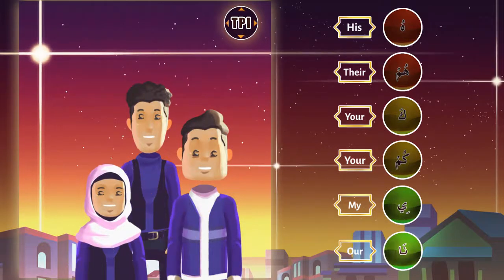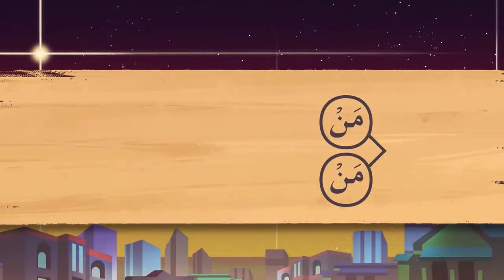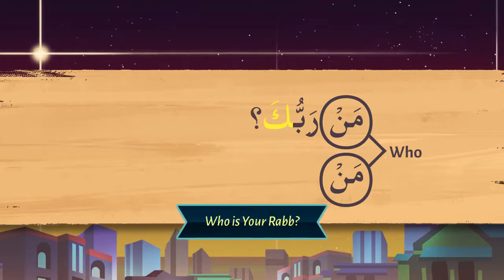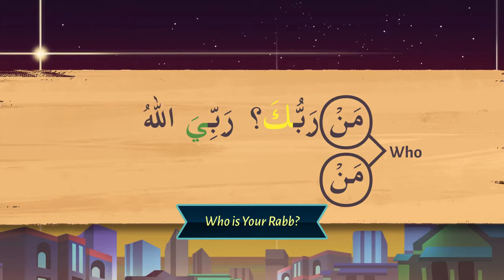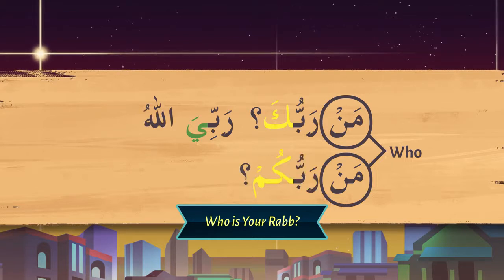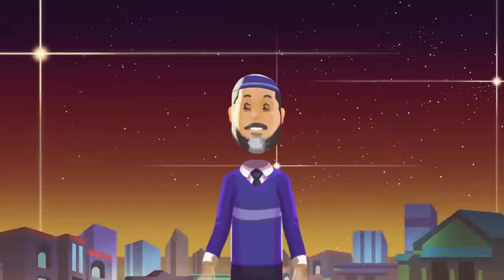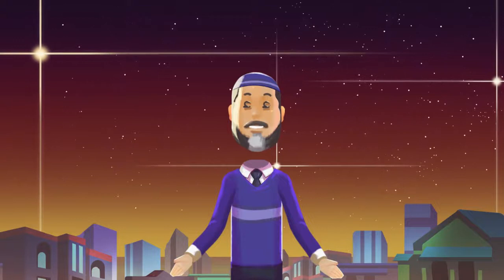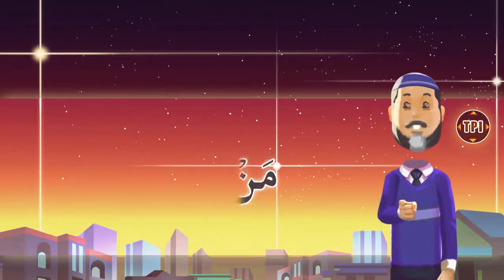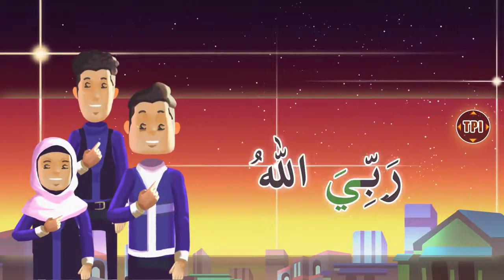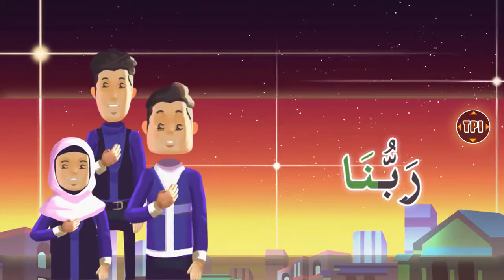Let's say spoken Arabic. Man means 'who?' Man Rabbuka — Who is your Rab? You will say: Rabbi Allah. Man Rabbukum — Rabbuna Allah. Very good, Masha'Allah. Can you say it once again? Man Rabbuka — Rabbi Allah. Man Rabbukum — Rabbuna Allah.